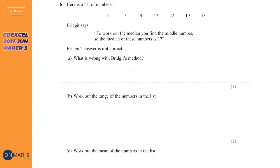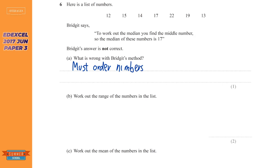Hi, what's up guys, OnMaths here and we're looking at averages. First question: Bridget says to work out the median you find the middle number, which is 17. That sounds good, but unfortunately that's not how it works because you need to order the numbers first — by size, smallest to biggest or biggest to smallest. You can actually do it either way.